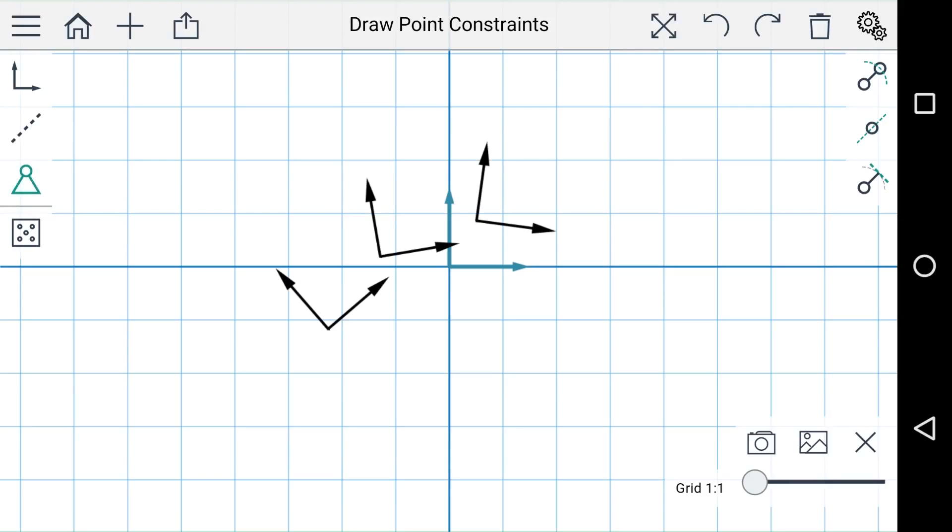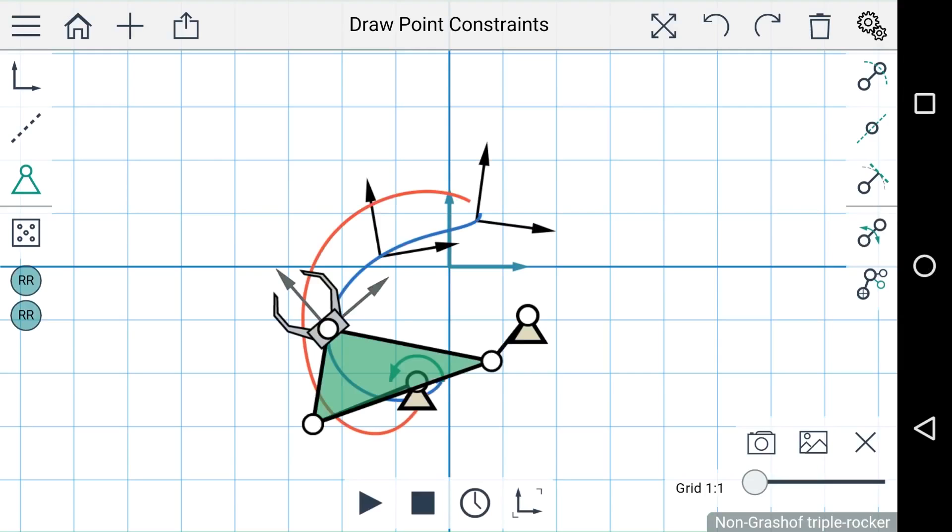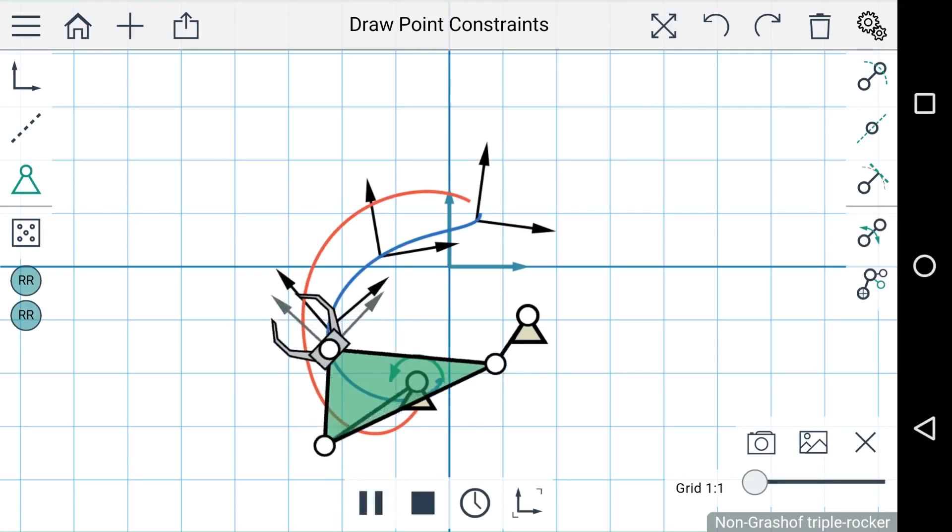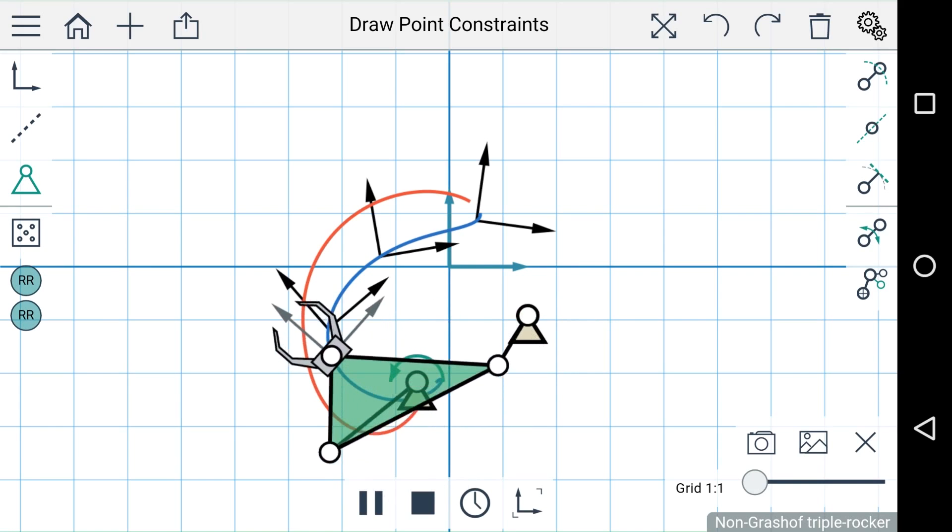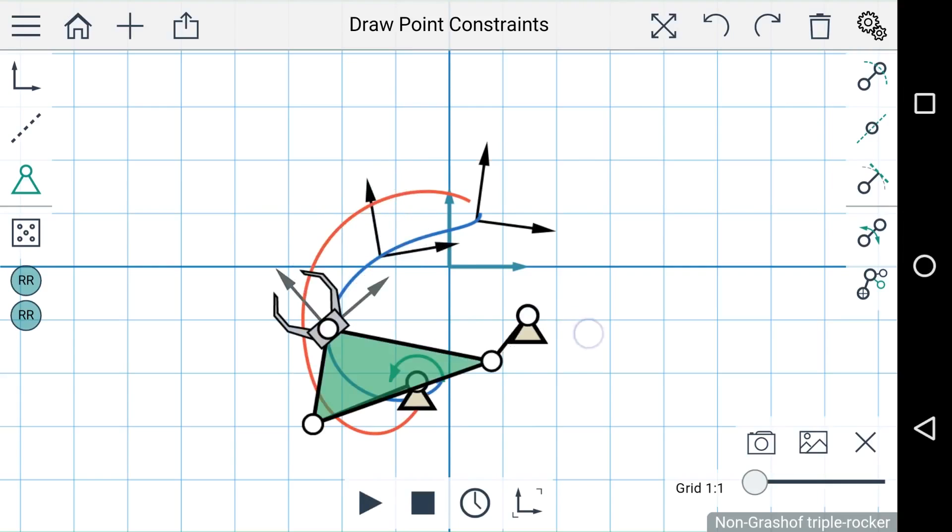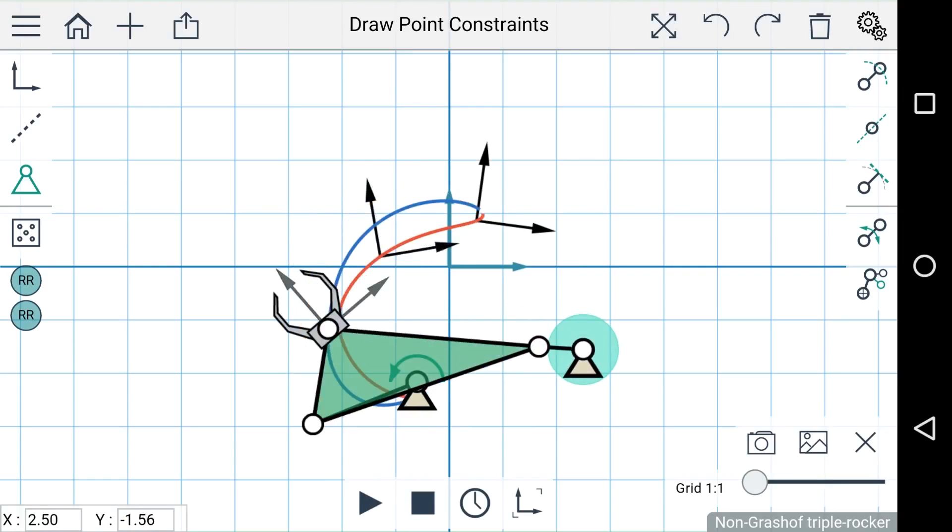So these actually define where the ground pivots will be placed. Just tap on the screen where you'd like the pivots to be placed and the linkage is generated for you. As you can see, the linkage passes through all three points, and you can move these point constraints if you'd like and the linkage will change to fit the constraints.